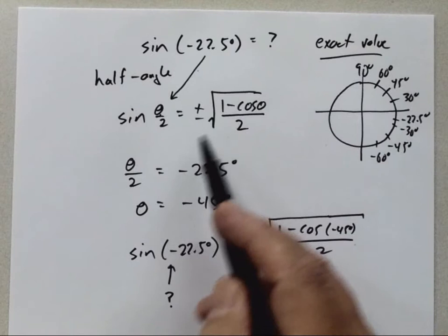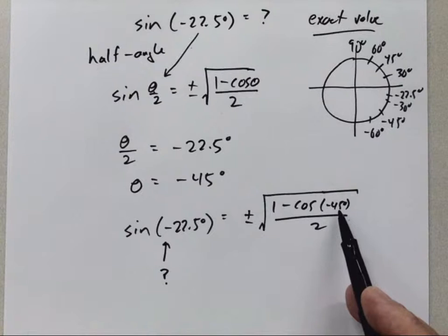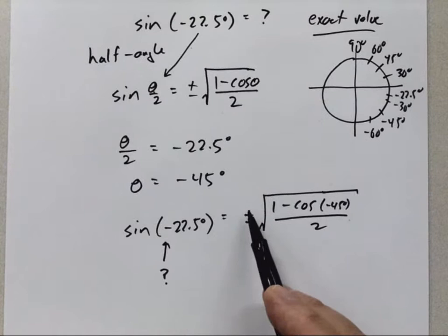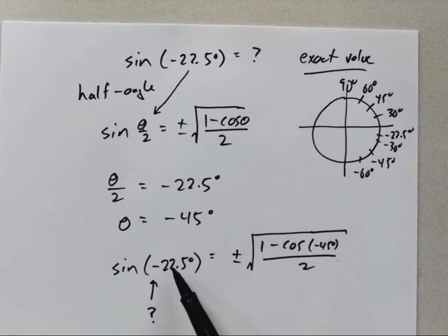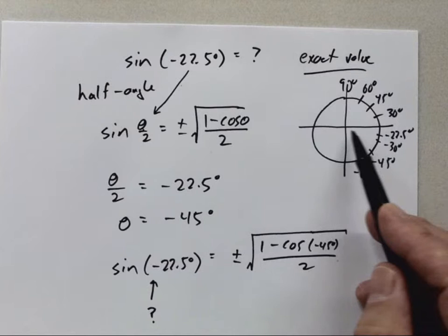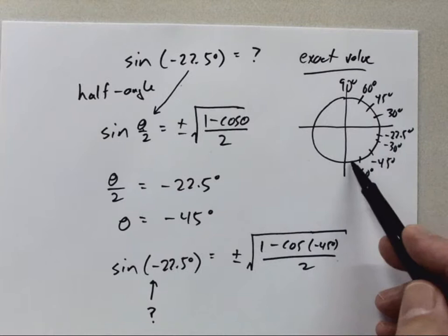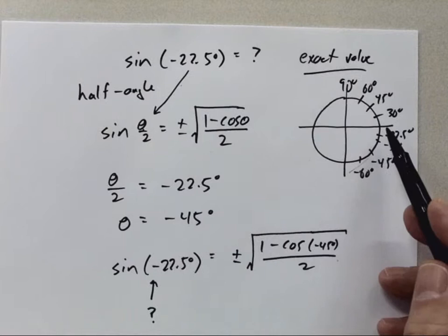Now I've still got the plus or minus in the formula — I know I can't have both. Since I'm trying to find the sine of negative 22.5 degrees, that angle is in the fourth quadrant. The sine of an angle in the fourth quadrant is negative, so I know this result has to be a negative value.